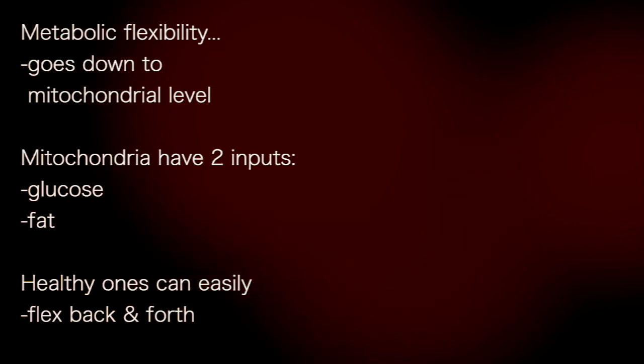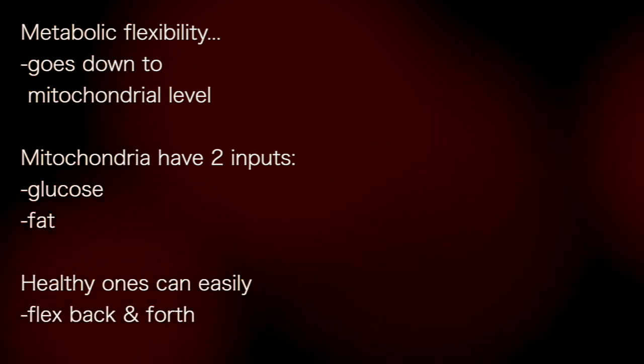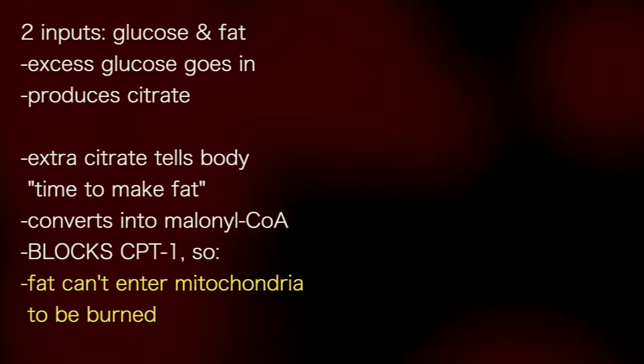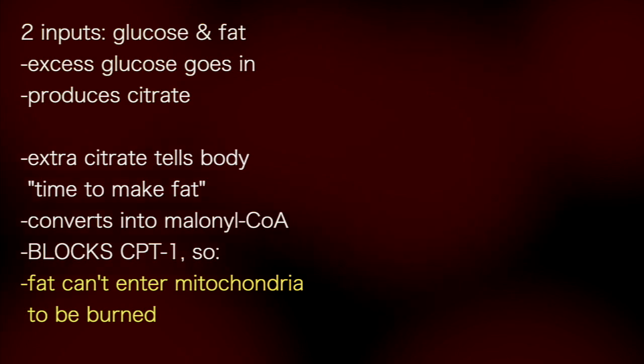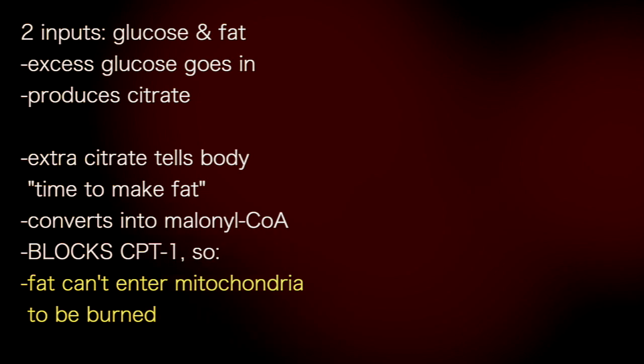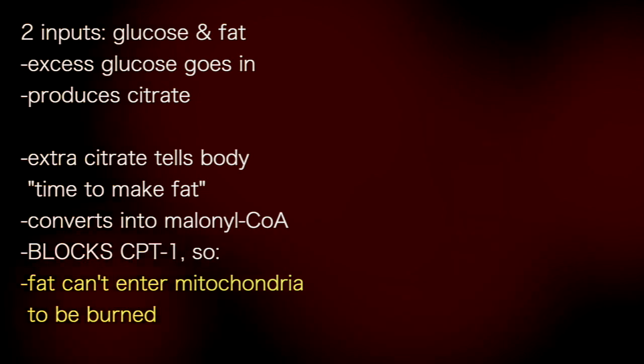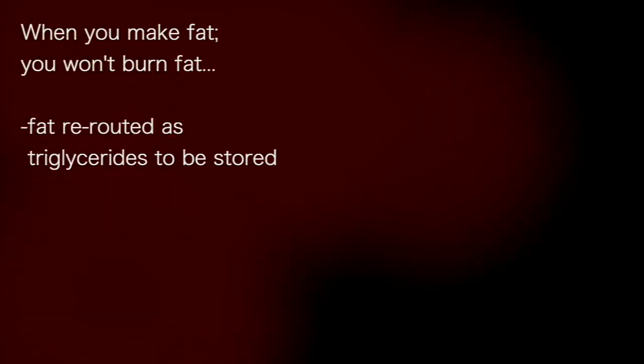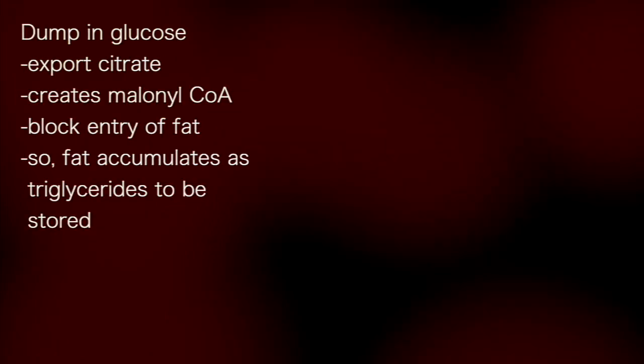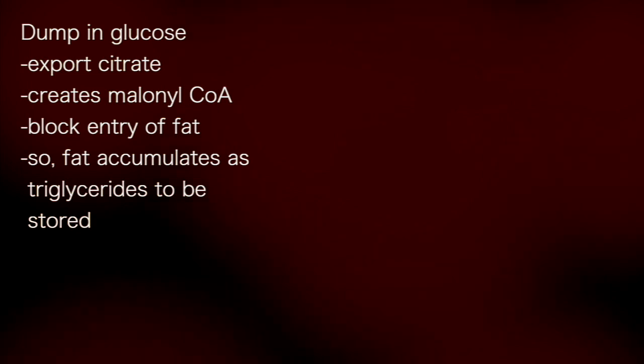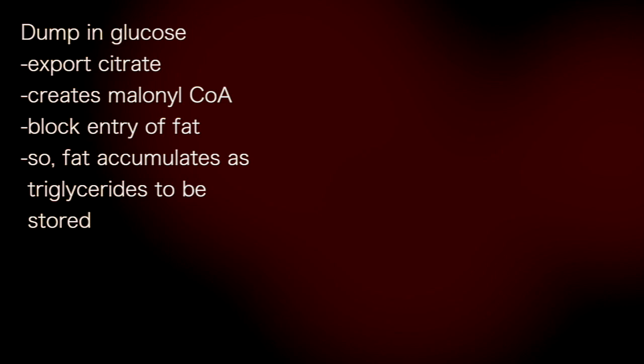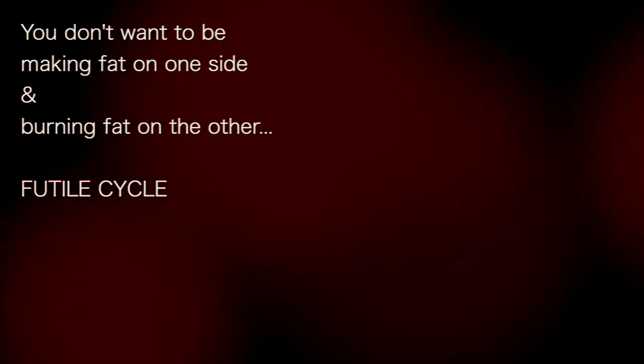Metabolic flexibility goes down to the mitochondrial level. Mitochondria have two inputs, glucose and fat. Healthy ones can easily flex back and forth. When you have these two inputs, glucose and fat, and there is excess glucose going in, this produces citrate. This extra citrate tells the body, time to make fat. It converts into malonyl-CoA, which blocks the CPT-1. So fat can't enter the mitochondria to be burned. When you make fat, your body simply won't burn fat. Fat is rerouted as triglycerides to be stored. You dump in all this glucose, you export citrate, creates malonyl-CoA. This blocks the entry of fat into the cell. So fat accumulates as triglycerides to be stored. You don't want to be making fat on one side and burning fat on the other. That would be a futile cycle.